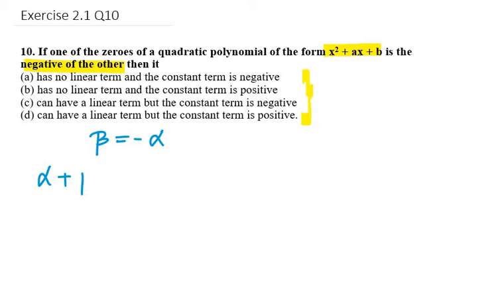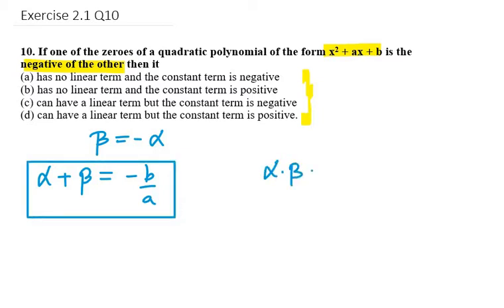The formula to know is alpha plus beta, that is sum of zeros, equals minus b over a. The other one is alpha dot beta which equals c over a. That is the product of zeros equals c over a in this case.